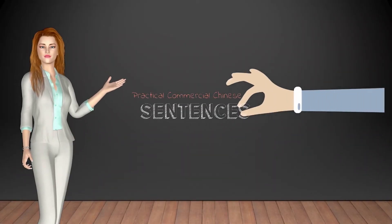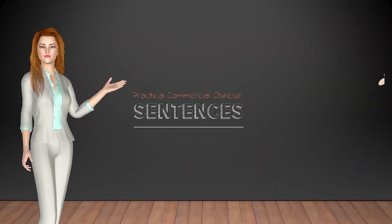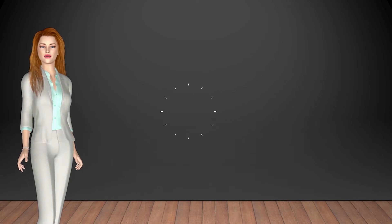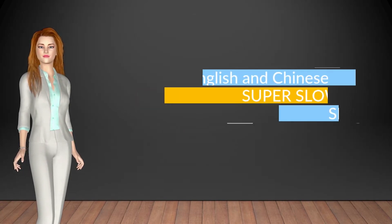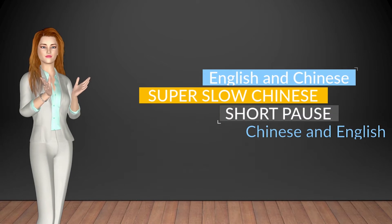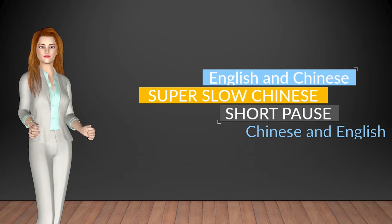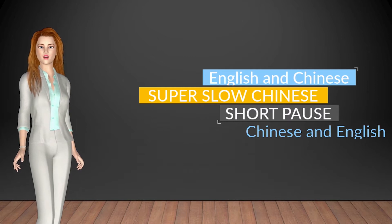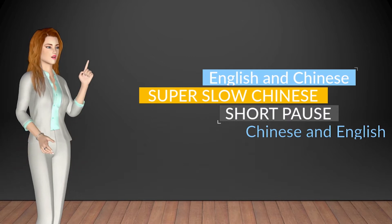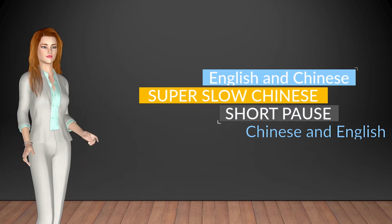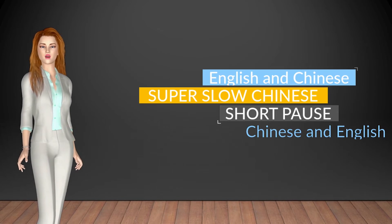The following session will be our sentences. Please note all sentences will be spoken in the following order: English, normal speed Chinese, slow Chinese, a short pause, normal speed Chinese, and English. Please make use of the short pause so that you can repeat the Chinese sentence after us. You can constantly revise the video for better results.